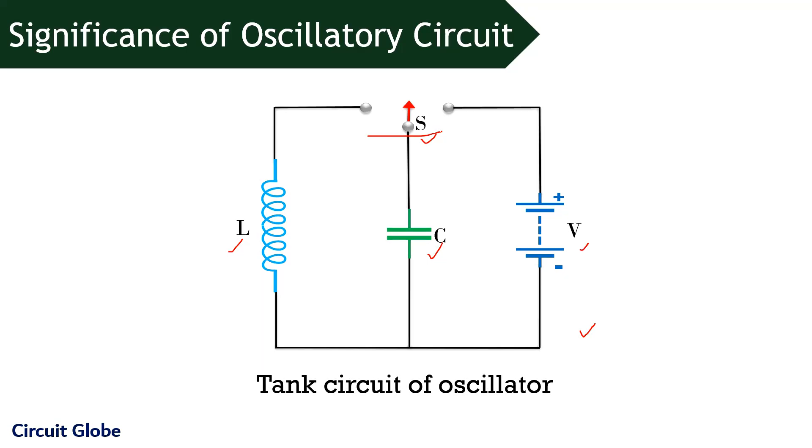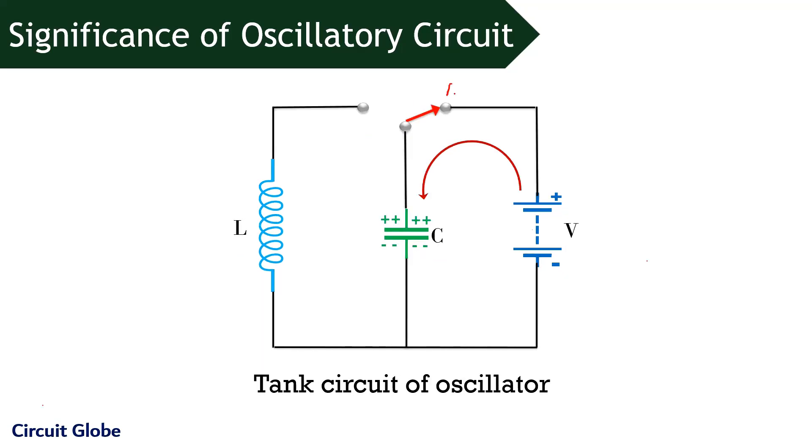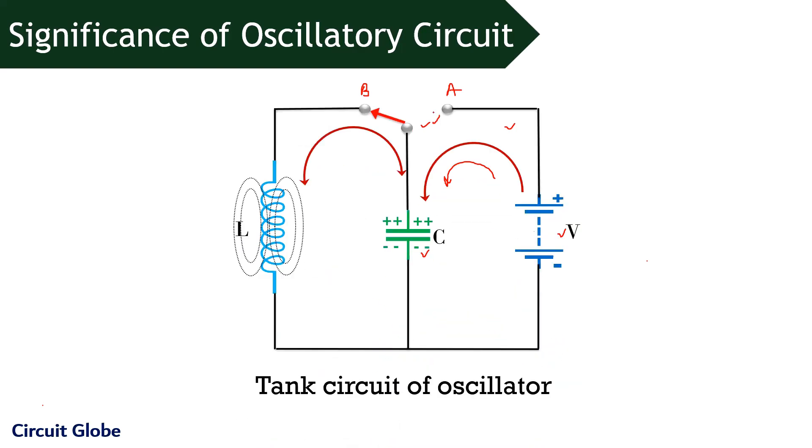Now, let us check what happens when switch is closed. Suppose this is position A and this is position B. Once the switch is moved to position A like shown here, this particular part of circuit gets completed and due to the supply input, current begins to flow through the circuit in this way. Due to the flowing current, capacitor begins to store the charge in the form of electrostatic field and once the capacitor gets completely charged up to the DC supply voltage, the position of this switch gets changed from A to position B.